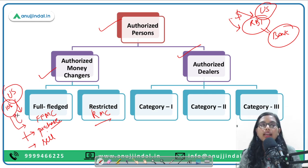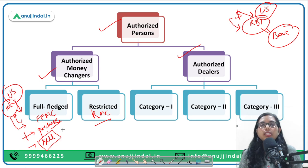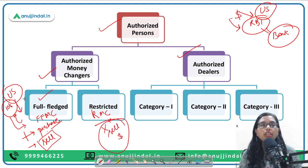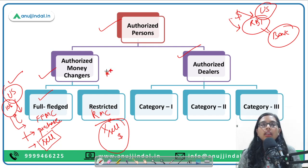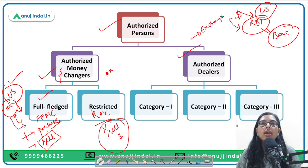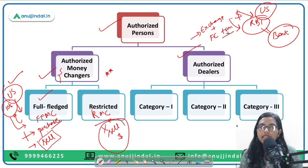Full-fledged money changers can sell dollars to Indians traveling abroad in exchange for rupees. Restricted money changers, as the name suggests, are restricted — they can only purchase foreign exchange from foreign nationals but cannot sell. Authorized dealers, apart from money exchange, also undertake foreign exchange transactions including buying and selling of securities and currencies. There are three categories: Category 1, Category 2, and Category 3.